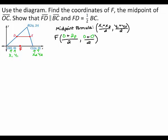When you simplify, 0 plus 2p gives you 2p, and 0 plus 0 gives you 0. 2p divided by 2 gives you p, and 0 divided by 2 gives you 0. So, the coordinates of F are (p, 0).